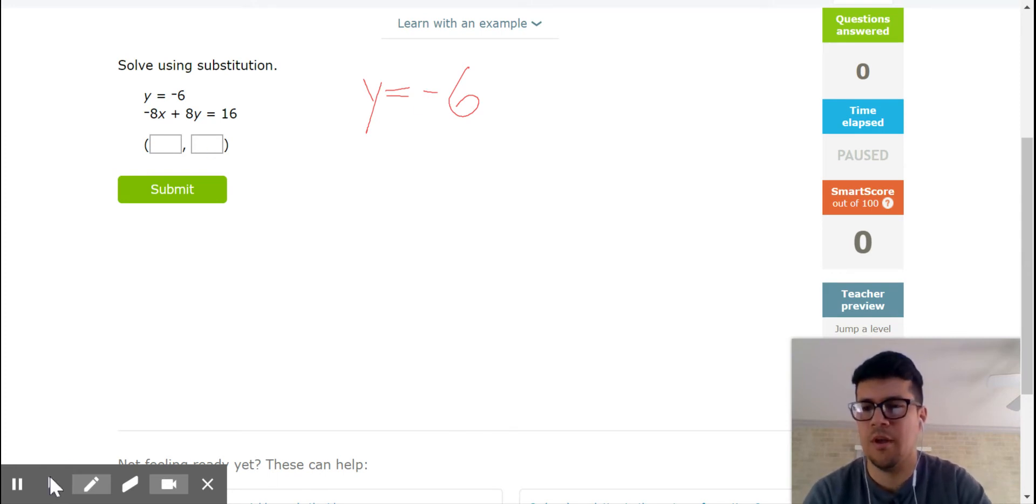I'm gonna go ahead and enter that. So y equals negative 6. I actually need to find my x coordinate, and the way that I'm gonna do that is by substituting.